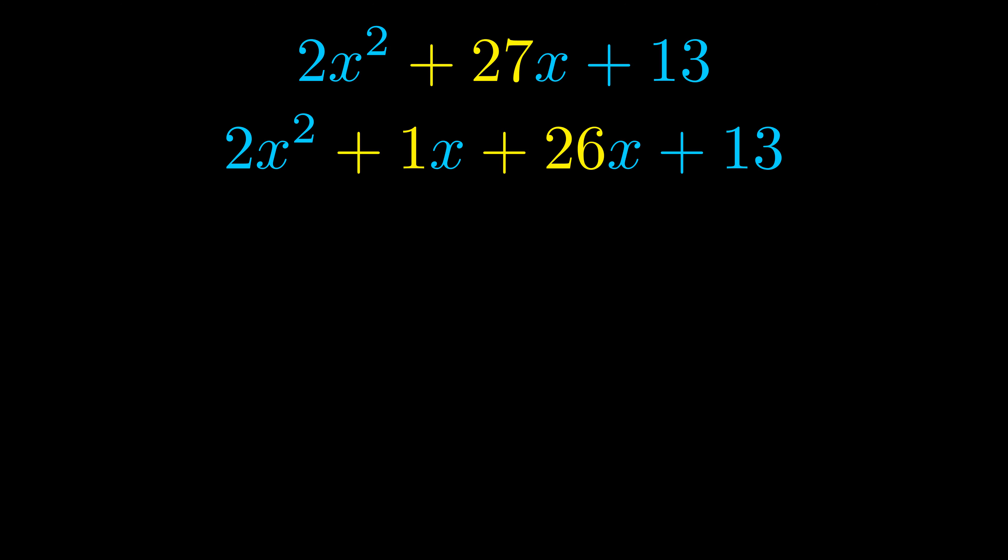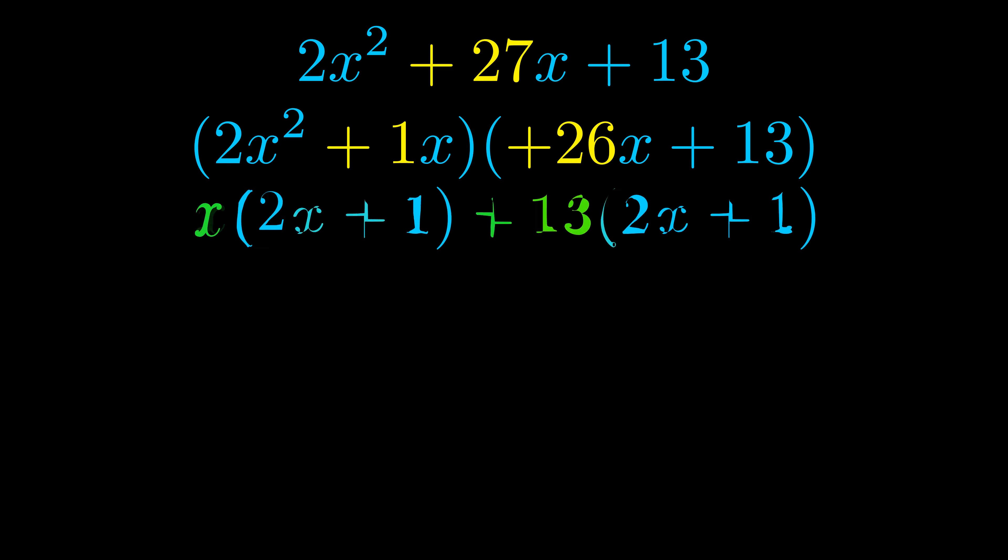Once we've done this, we go ahead and put parentheses around the first term and the last term, and we do that so that we can take the greatest common factor out of both terms. We can see the greatest common factor is now outside in green.